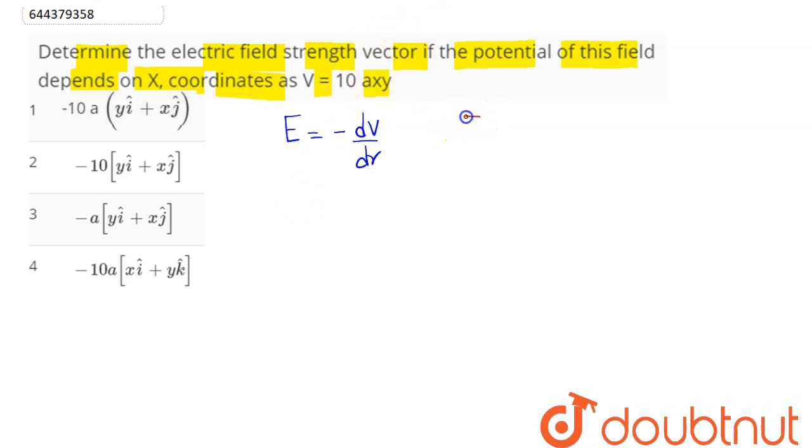So the x component can be said as Ex equal to minus dV divided by dx. So minus of d/dx, the potential as function of x and y is 10Axy. Now we can say y is a constant, so this comes outside hence this becomes d/dx of x which is equal to 1.